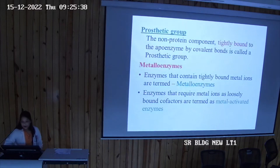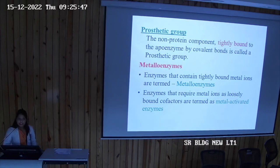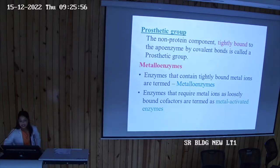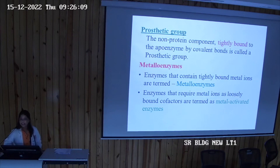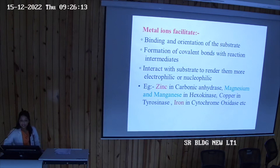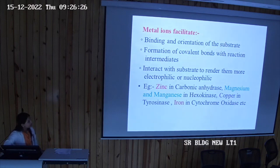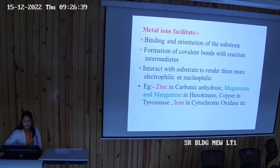Prosthetic groups are non-protein components tightly bound to the apoenzyme by covalent bonds. Metalloenzymes contain tightly bound metal ions; metal-activated enzymes require metal ions as loosely bound cofactors. Metal ions facilitate substrate binding, orientation, and covalent bond formation. Examples: zinc in carbonic anhydrase, magnesium/manganese in hexokinase, copper in tyrosinase, and iron in cytochrome oxidase.